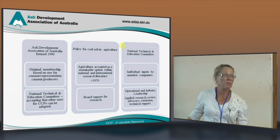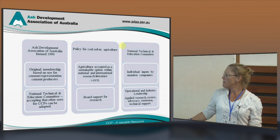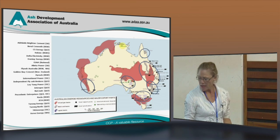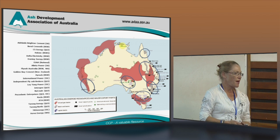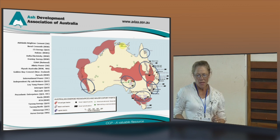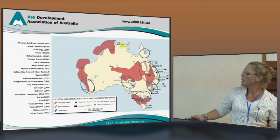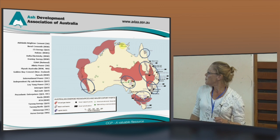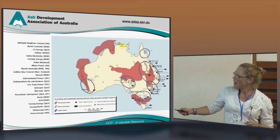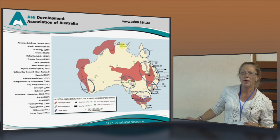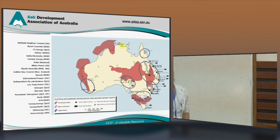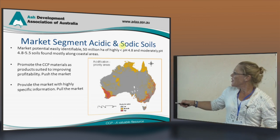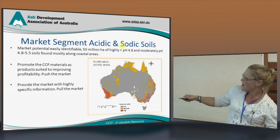The Ash Development Association has a mandate to be an industry leader. The current market strategy for coal ash includes advocacy of our ashes. The Australian coal resources are located in approximately six coal resource basins. There are 31 power stations, and this area is also located in the main agricultural areas. Within that main agricultural area we have approximately 50 million hectares of soils which are acidic.